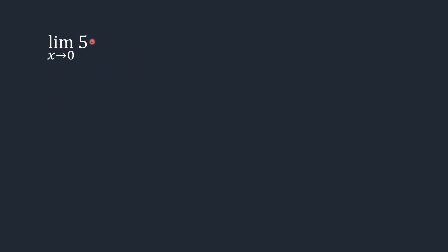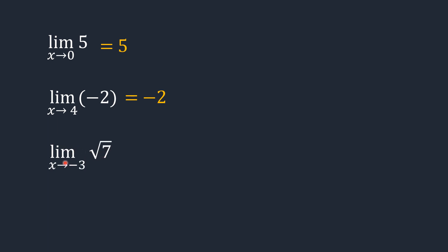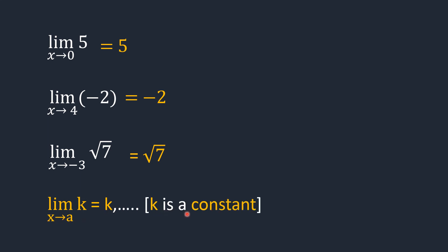Now we will understand how to find the limit of constant functions. For example, limit of 5 as x approaches 0: since 5 is a constant and there is no x in 5 which can approach 0, this limit equals 5 itself. Similarly, limit of minus 2 as x approaches 4 equals minus 2. In general, limit of k as x approaches a equals k, where k is a constant.